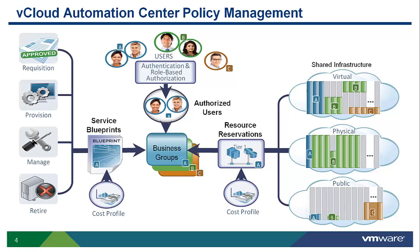The third policy is service blueprints. Blueprints define the policies that will control the provisioning and ongoing management of a vCloud Automation Center compute service — from the initial request, provisioning, ongoing management, and decommissioning. This lifecycle management can be unique for every blueprint defined in the system.